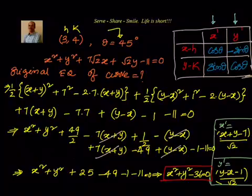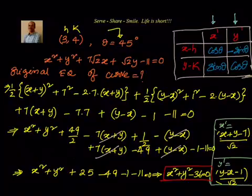This is a problem I created — most textbooks only show the combination formula. I took one equation, transformed it, then verified by reversing back to the original. In the next session, we will do another example where we start with the original equation and transform it to find x' and y' — exactly the reverse of this. Thanks for your time and support.